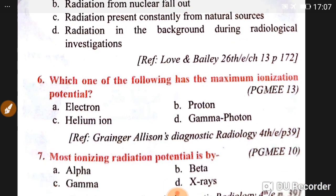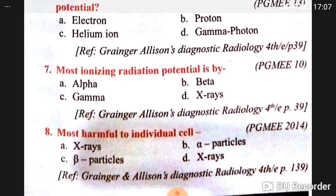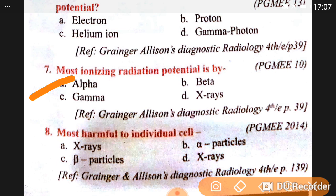Question number seven: the most ionizing radiation potential is from alpha particles — that is the answer to question seven. Alpha particles are also the most harmful to individual cells.